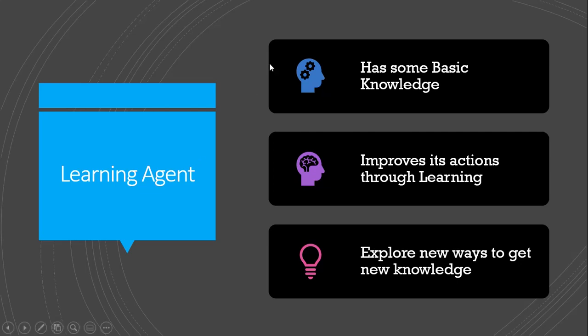Just like all other agents, they also have some basic knowledge that we feed into them so that they can perform some actions according to needs. But the thing which differs learning agent from other agent is that it can improve its actions through learning with the passage of time. It will also explore some new ways to get some new knowledge.